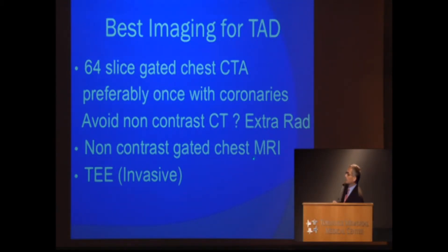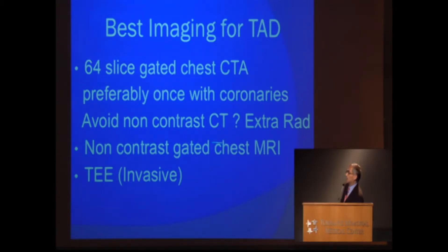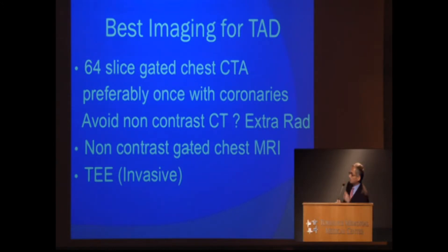For follow-up, not everybody needs a yearly CT. Patients can safely be followed with a non-contrast gated chest MRI because there is no radiation. It takes a little longer but it is a safe test. One has to know that MRI, just like CT, most of the time captures images during diastole when the aorta is smaller, and that should not be the only way of measuring the ascending aorta — the systolic diameter must also be obtained.